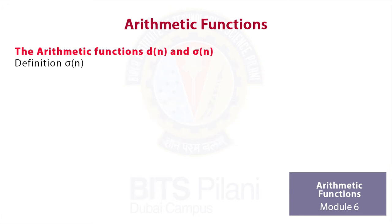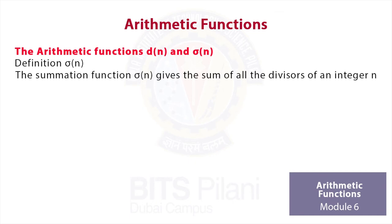Let's move on to the function σ(n), the summation function. The summation function σ(n) gives us the sum of all the divisors of an integer n. We can always use the following formulas. Again, there will be three cases. If n is a prime p, we know p has only two divisors 1 and p, so σ(p) = p + 1.